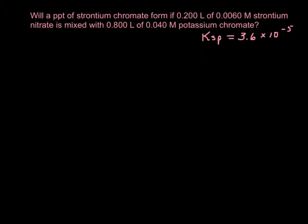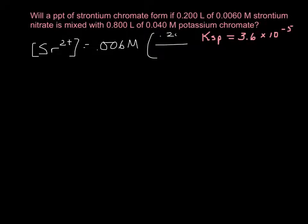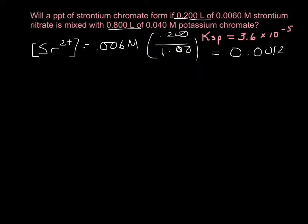Will a precipitate of strontium chromate form if 0.2 liters of 0.006 molar strontium nitrate is mixed with 0.8 liters of 0.04 molar potassium chromate? First, let's find the new concentrations. The concentration of strontium is 0.006 molar times its volume (0.2 L) over the new total volume of 1 liter — because 0.2 plus 0.8 gives 1. So the new strontium concentration is 0.0012 molar.